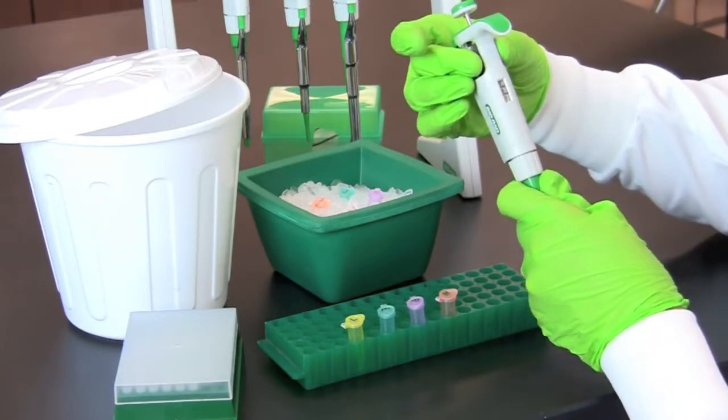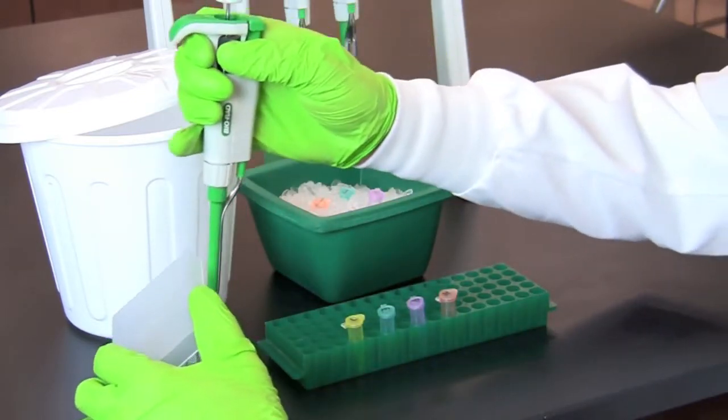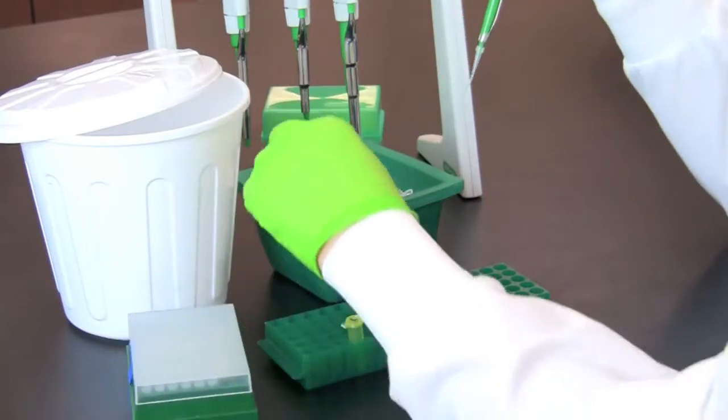Once you have finished transferring four microliters of lambda DNA to each of the color-coded tubes, reset your micropipette and use a fresh tip to transfer six microliters of 2X restriction buffer to the color-coded tube labeled L.